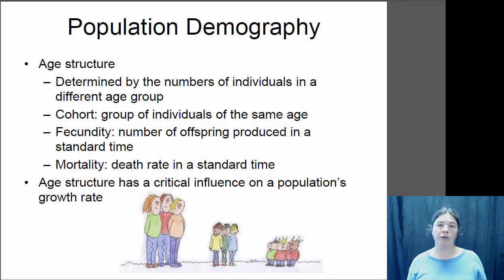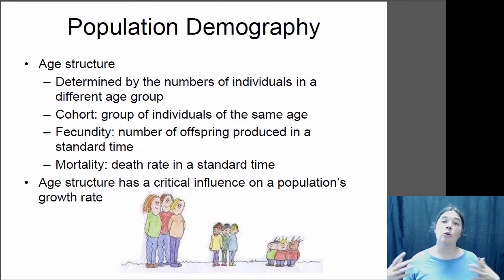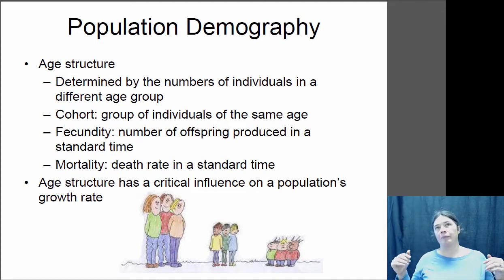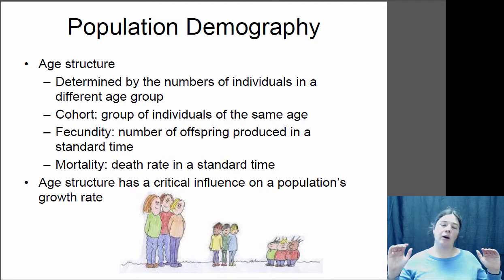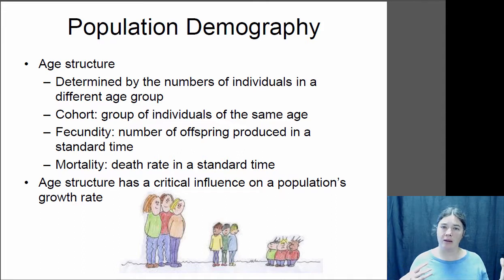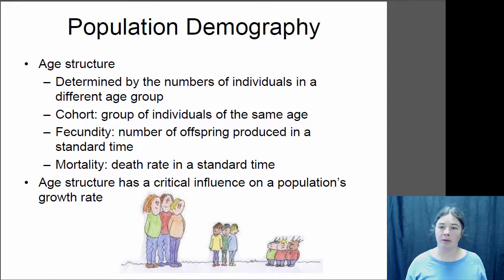You also want to look at mortality — the probability that any given individual is going to die within a particular period of time. What's the probability of dying before one year old? Between one and two years old? From this, you can build a model of your population where you look at each cohort and how many individuals are in it. This is essentially an age structure model, and the age structure has a really important influence on the population's growth rate.